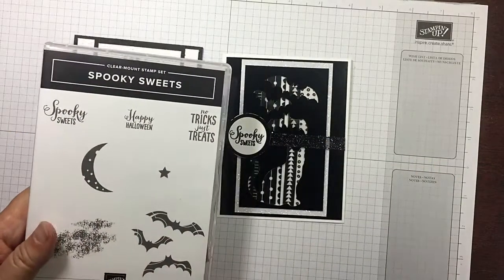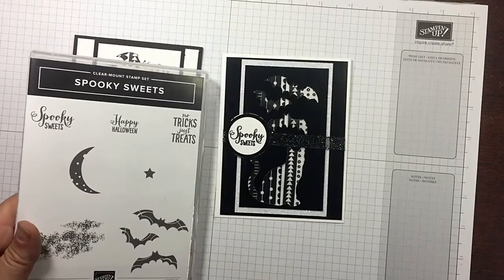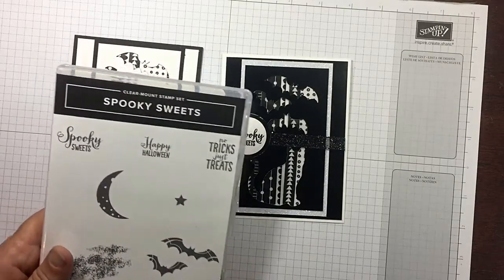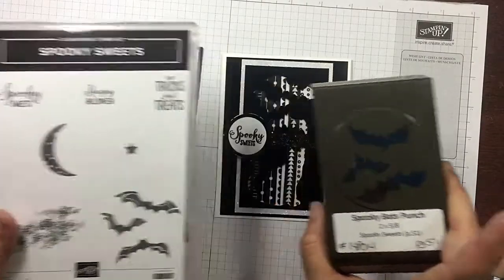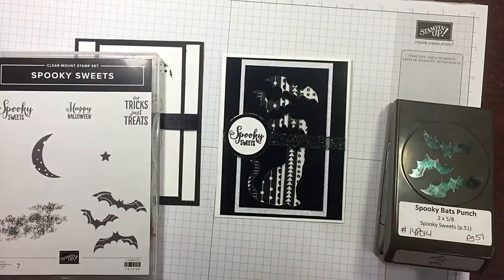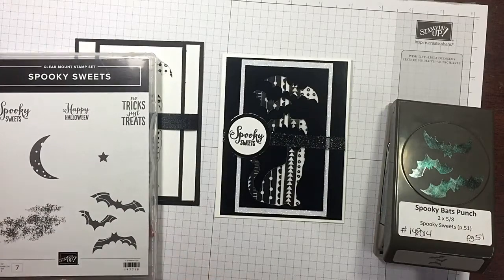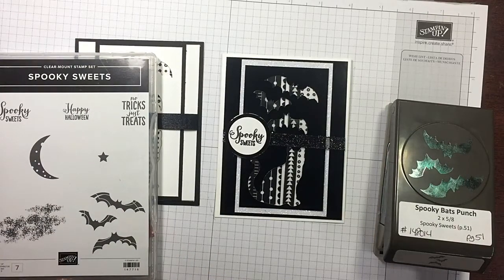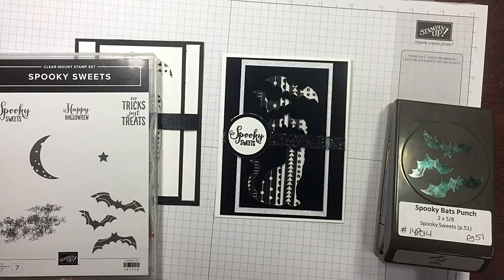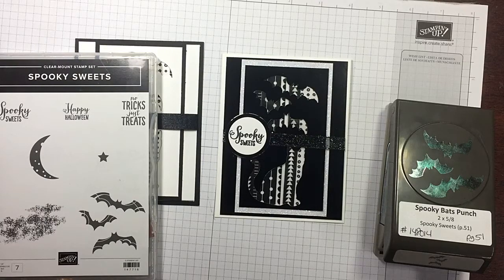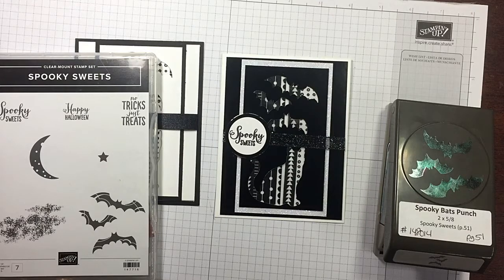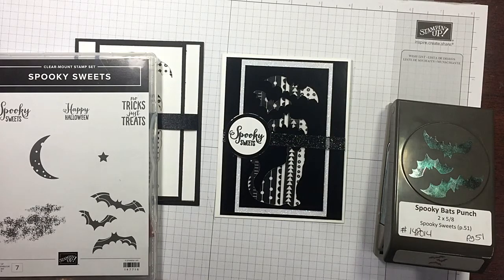I used the Spooky Sweets and the Bat Punch and the Cat Punch. And like I said, the Bat Punch and the Spooky Sweets are a bundle that you can get right now and save 10%. If you enjoyed today's video, please give me a thumbs up. Make sure you subscribe to my channel. If you're looking for an independent Stampin' Up Demonstrator and you live in the United States, I'd love to be your gal. I sure appreciate your business. As always, I've listed two more videos at the end of this one that I think you may enjoy. I hope you have a wonderful day and happy crafting.